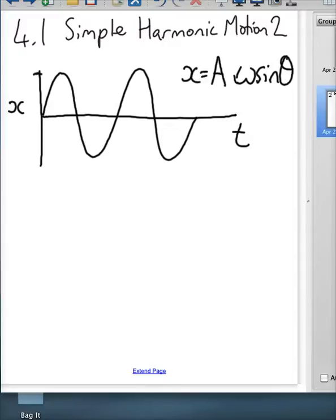A is the amplitude. It's the maximum value, capital A, that the x can get. It's basically how far we pulled it down to start with. Sometimes this is also written as xO. So A and xO are the same thing.